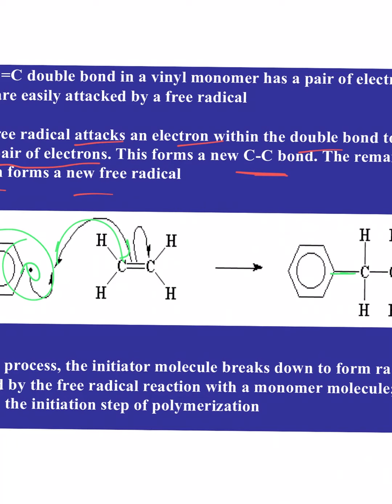Question: aren't CC bonds stronger than single bonds, so why would the radical attack? It has to do with PZ orbitals — those electrons are sitting up above the molecule in a 2P orbital, which is much more exposed. The radical can find that electron cloud and react with it more easily. A double bond is stronger than a single bond, a triple bond stronger than a double bond — but that doesn't mean those electrons are locked up where nothing can react with them. They're in different orbitals.